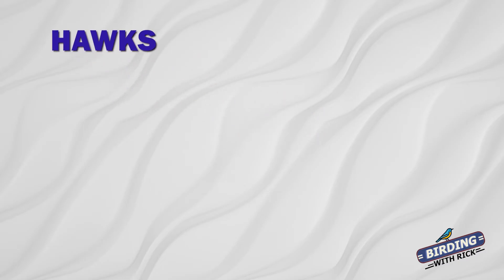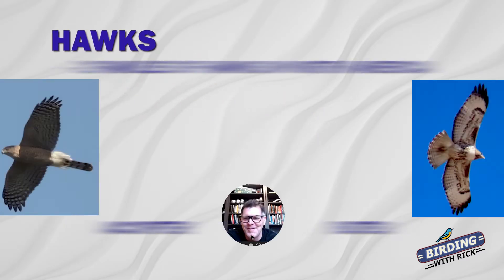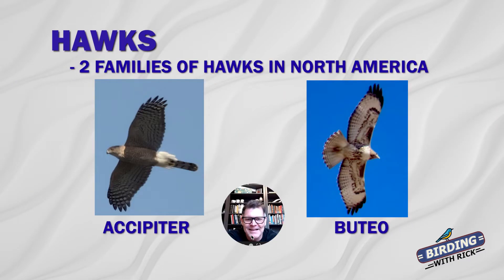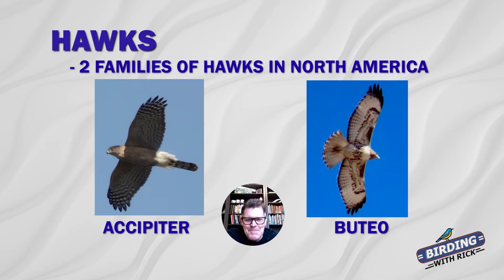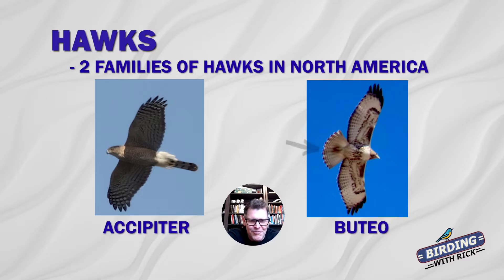There are two different types of hawks in North America: accipiters and buteos. What do those mean? They are fancy scientific words, but let me break it down for you. There's small hawks and large hawks. There's ones with long skinny tails and short rounded fat tails. That's the difference.